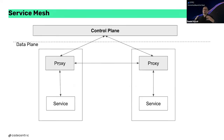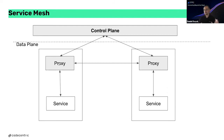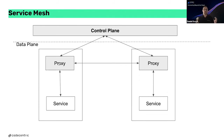At a higher level, we have a control plane and a data plane. We can have different services in different data planes or different clusters, and they can all communicate because of the proxies placed in the data planes, which are connected to the control plane. This is the standard architecture diagram we see when talking about service meshes.